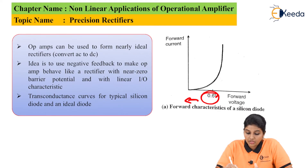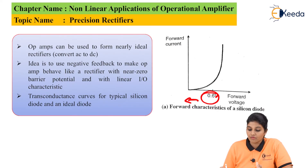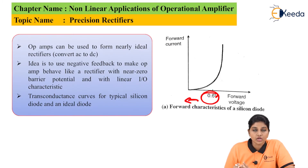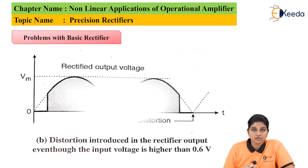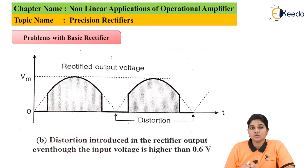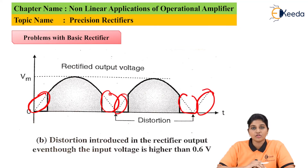The transconductance curves of a typical silicon diode and ideal diode are given, with the x-axis consisting of forward voltage and the y-axis consisting of forward current. With the help of these characteristics we come to know that the diode conducts only after 0.6V. The problem with a basic rectifier is that even if the voltage is above 0.6V, we can see distortion present in the output waveform. To remove such distortion, precision rectifiers are used.